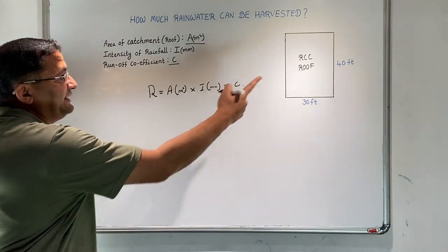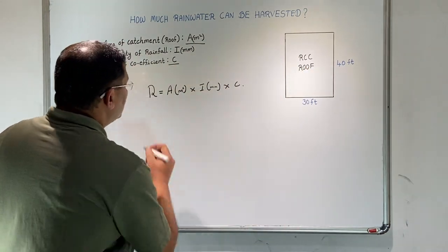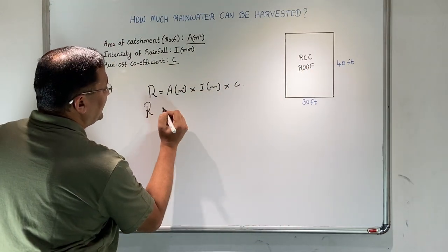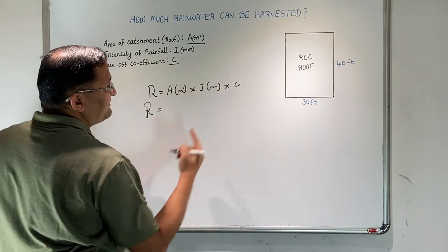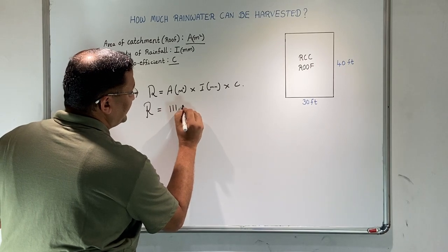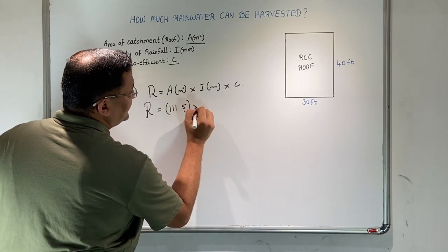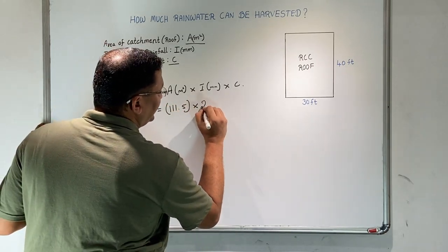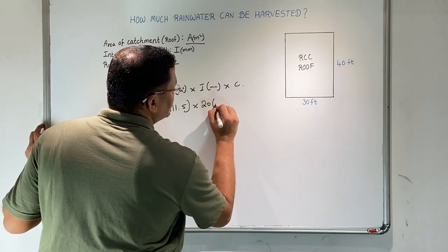We will take this example. We have 30 by 40 feet. When we convert this into square meters, this becomes 111.5 square meters. Let us take an intensity of rainfall as 20 mm for a single rain.